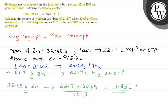Therefore, we can conclude that 11.35 liters of hydrogen gas is liberated at STP when 32.65 gram of zinc reacts with HCl. Hope you have understood it well. Best of luck.